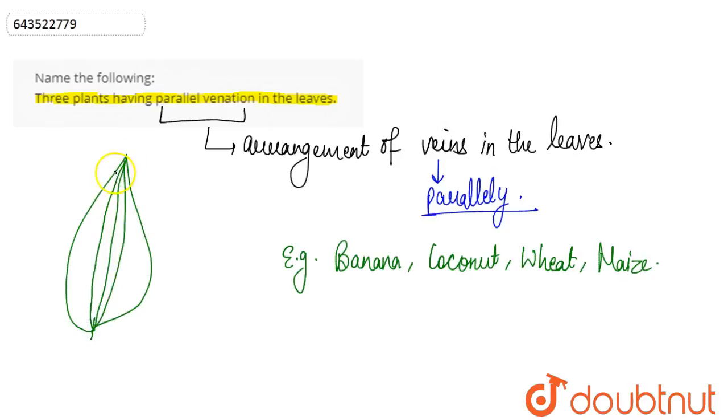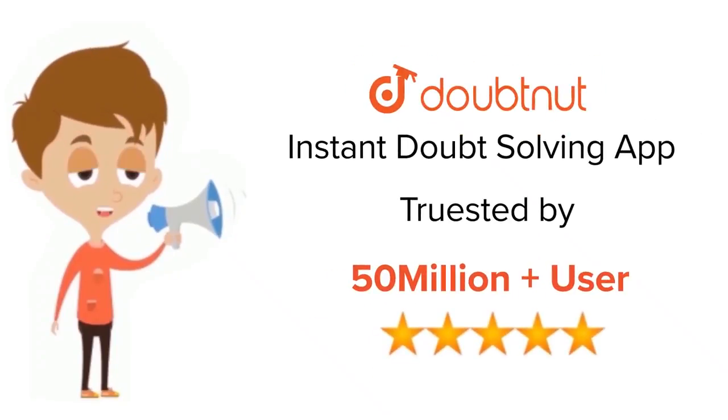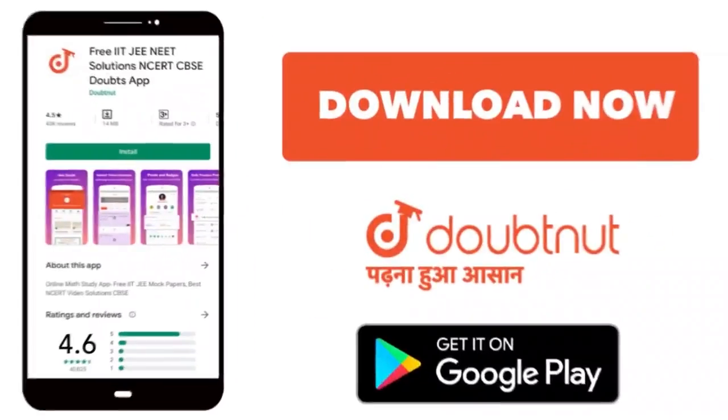like this. This is what we know as parallel venation. For class 6th to 12th, up to IIT-JEE and NEET level, trusted by more than 5 crore students, download Doubtnet app today.